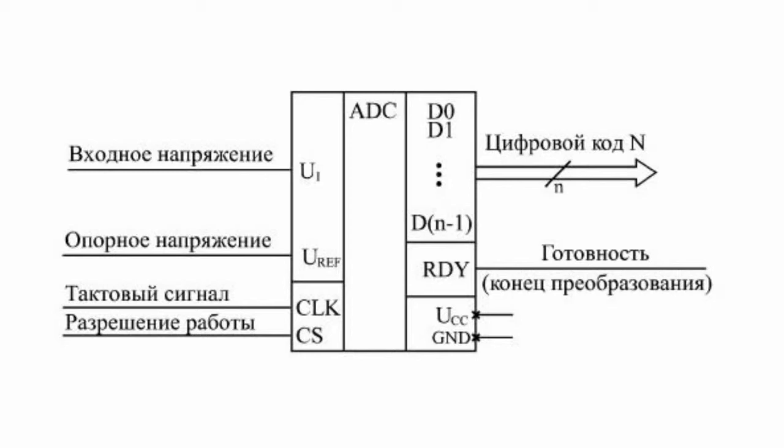There is a wide range of ADC chips available with different performance rates, acceptable ranges of the input signal, values of errors, levels of supply voltage, and methods of delivery of the output code. Chips with a large number of bits usually have low performance, and the most high-speed devices have a small number of bits.